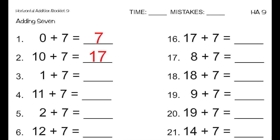Next is 1 plus 7, which equals 8. Following that is 11 plus 7, which is 10 more than 1 plus 7. So 11 plus 7 equals 18. Next is 2 plus 7, which equals 9. Following that is 12 plus 7, which equals 19, because it's 10 more than 9.